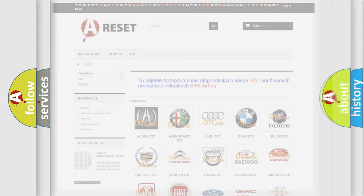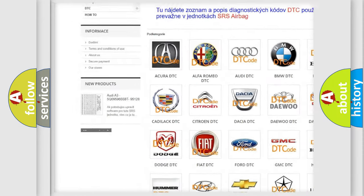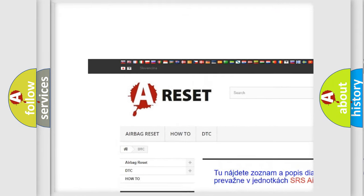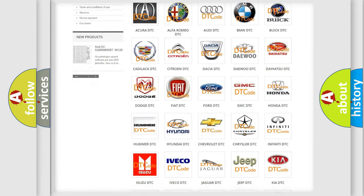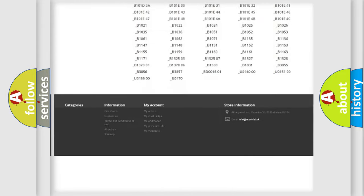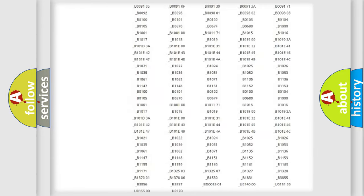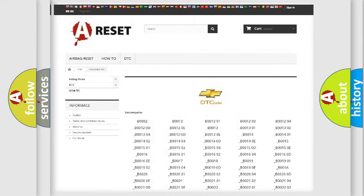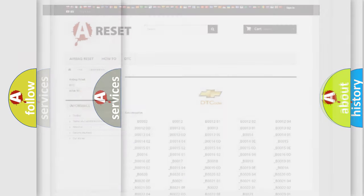Our website airbagreset.sk produces useful videos for you. You do not have to go through the OBD2 protocol anymore to know how to troubleshoot any car breakdown. You will find all the diagnostic codes that can be diagnosed in Chevrolet vehicles, also many other useful things.